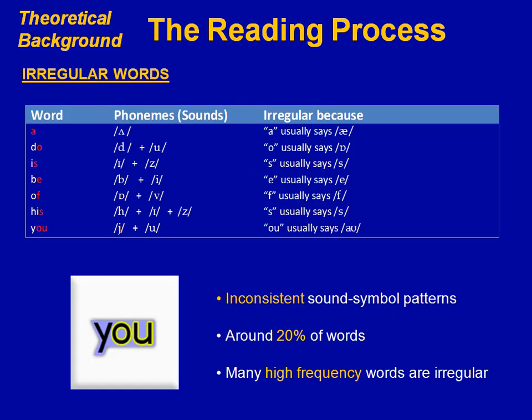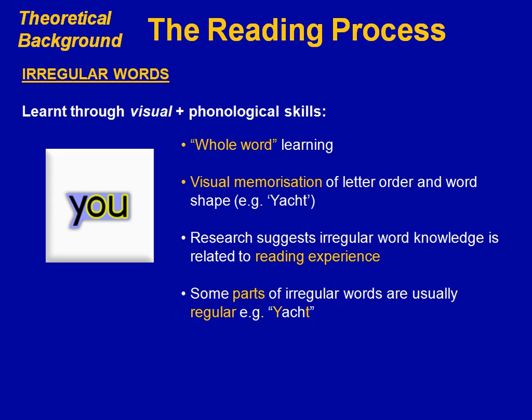Irregular words have inconsistent sound-symbol patterns, such as occurs in the word 'you', where the letters O and U normally say 'o' like in 'out'. Around 20% of our words are irregular. It's more difficult to read irregular words by decoding. Research suggests that irregular words are learnt with a greater emphasis on visual skills — there's a greater element of visual memorization of the unusual letter patterns within the word.